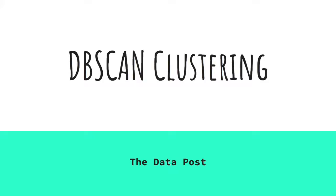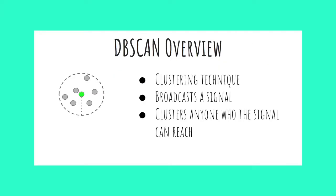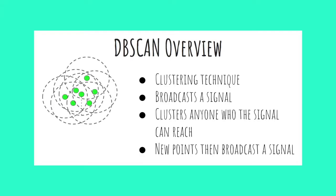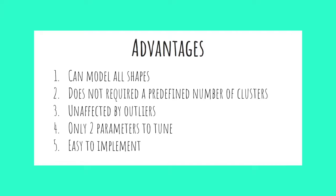As you saw in a previous video, DBSCAN is a clustering technique used to cluster data points. As a quick review, it works by choosing a random data point and having that point broadcast out a signal to anyone within a certain distance. Any data point that can be reached by that signal will be added to the cluster. The newly added data points then broadcast out their own signals and attempt to add more data points. Because of this chaining technique, the cluster is capable of growing into any shape, which brings us to the advantages of DBSCAN — the first of which is the ability to model any shape.